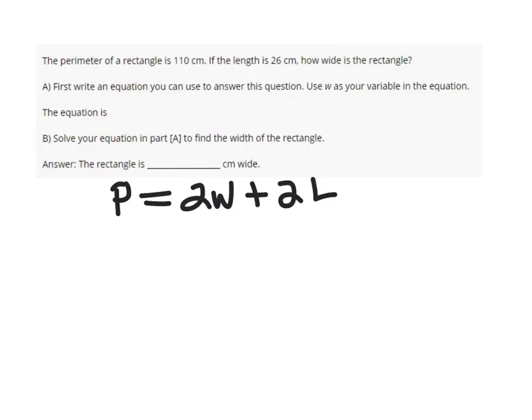So, we can fill in the information that was given. We know that the perimeter is 110 and the length is 26. Just trying to make parentheses there.